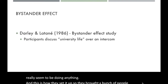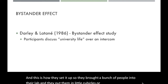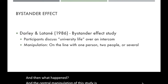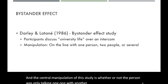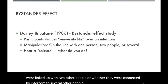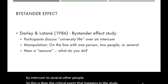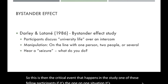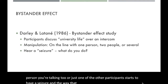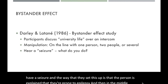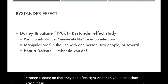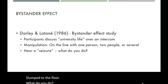They brought participants into a lab and placed them in small cubicles or phone booths, having a conversation entirely over an intercom. The central manipulation was whether the person was talking one-on-one with another participant, connected with two others, or linked by intercom to several other people. The critical event: one of the fellow participants starts to have a seizure. The person had explained they were prone to epilepsy, and then mid-conversation you hear them stuttering, saying something strange is going on and that they don't feel right — and then you hear a chair crash.